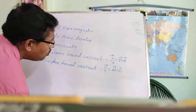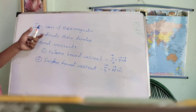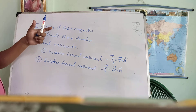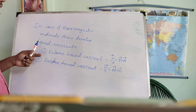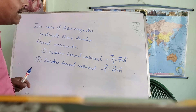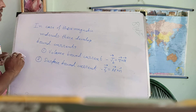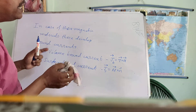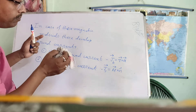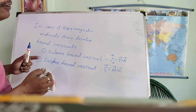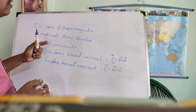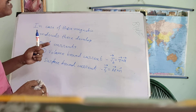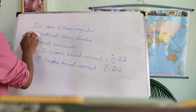So we have discussed the two kinds of phenomena — electric polarization and magnetization in magnetic materials. Now, after discussing all this, we will see how Maxwell's equations are modified by taking into account the volume bound charges and volume bound currents.